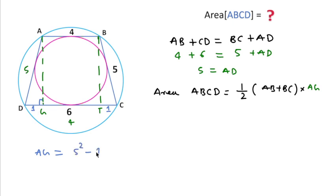That is AD squared, which is 5 squared minus 1 squared: square root of 25 minus 1, that is square root of 24. So AG will be the square root of 24.